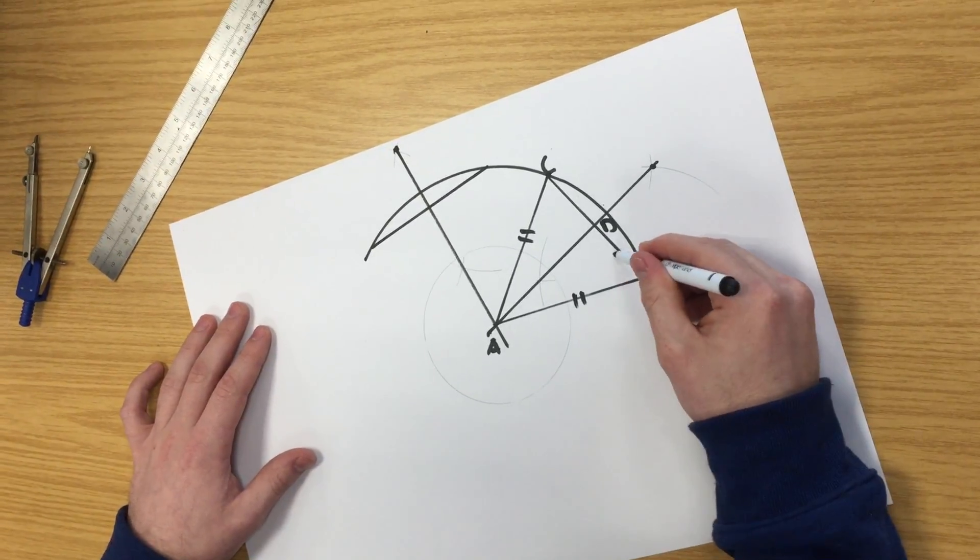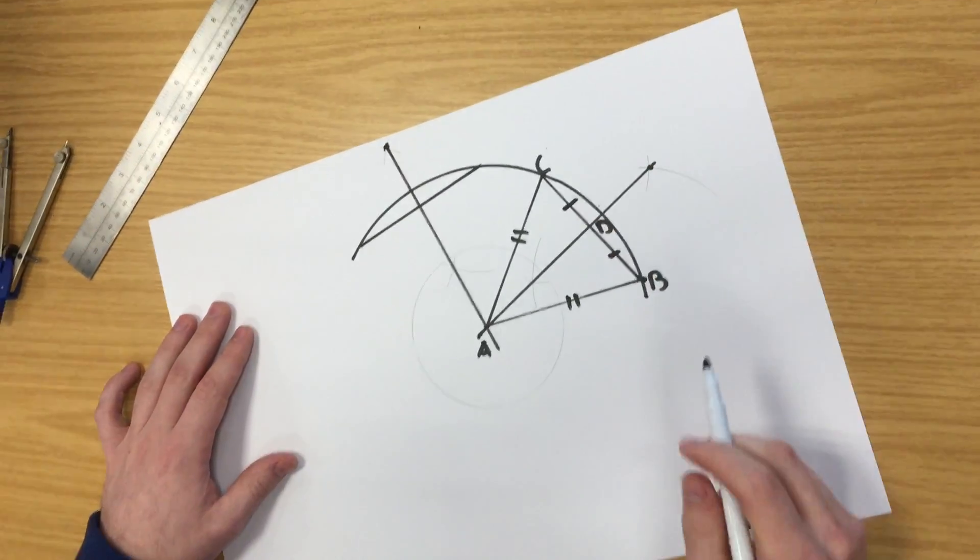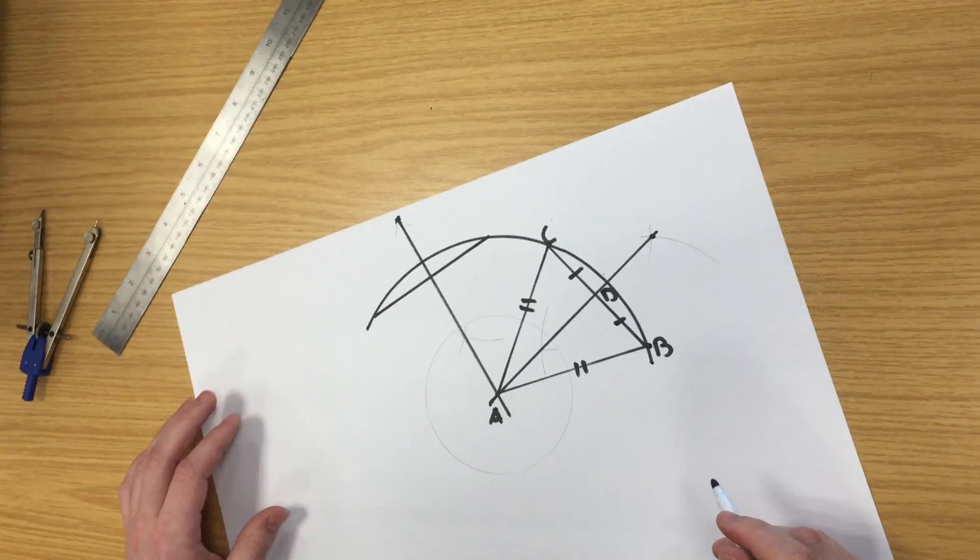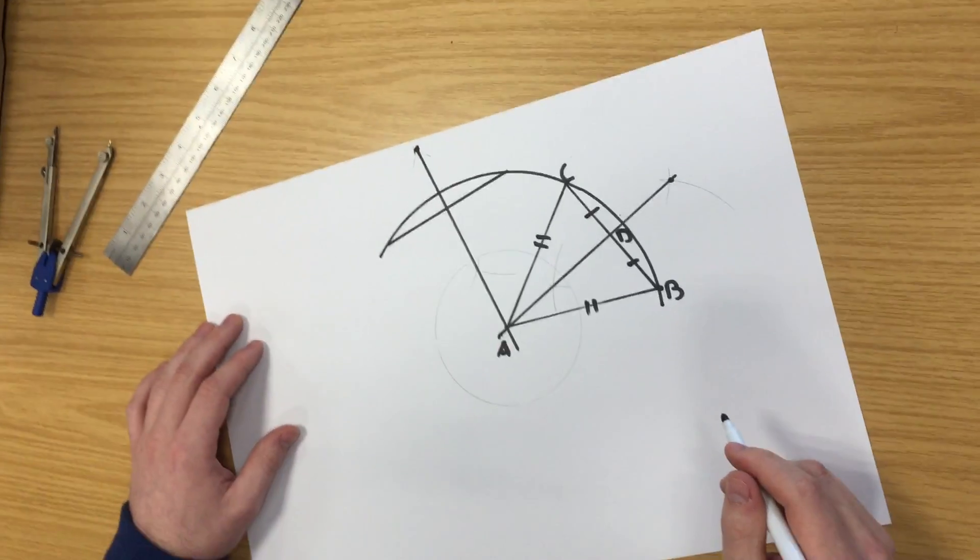BD is going to equal CD because the line AD is bisecting line BC. This gives us an SSS triangle, which shows congruency.